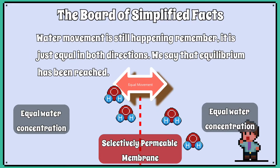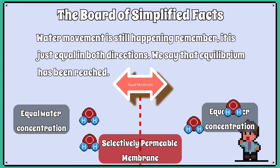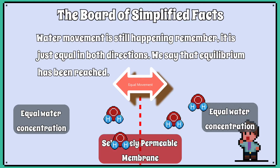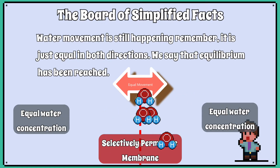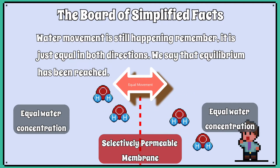Water movement is still happening — it is just equal in both directions. We say that equilibrium has been reached.